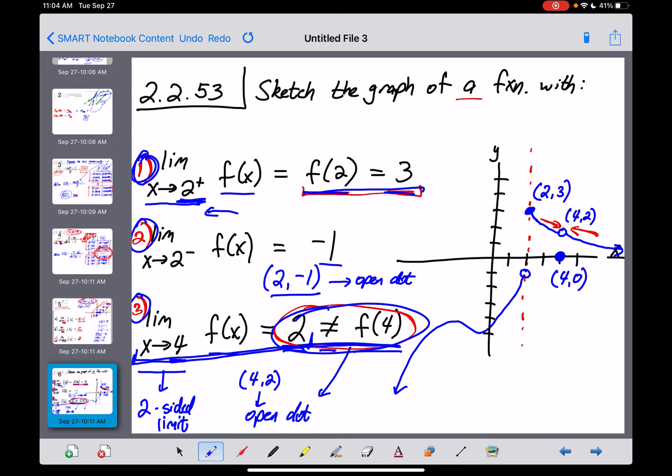So again, there's a million different things that we all could have right here. But we all need to have this open dot right here at the point (2, -1) and then connecting with the left. We need to have a closed dot right here at the point (2, 3) connected to what's going on on the right. And we need to have an open dot right here at the point (4, 2). And you may or may not have another closed dot when x is equal to 4, but that one's really not necessary.